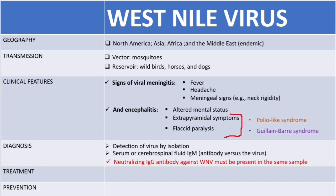So what we need to do is detect the IgG antibodies. Neutralizing IgG antibodies against the West Nile virus must be present in the same sample to confirm the diagnosis of the West Nile virus.